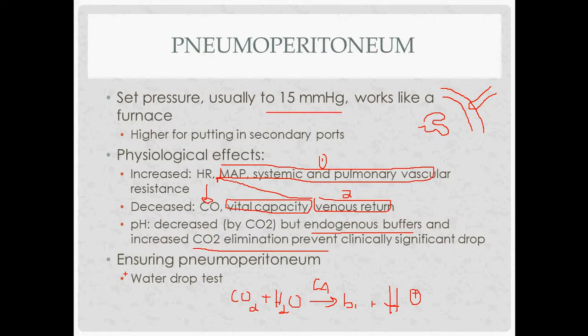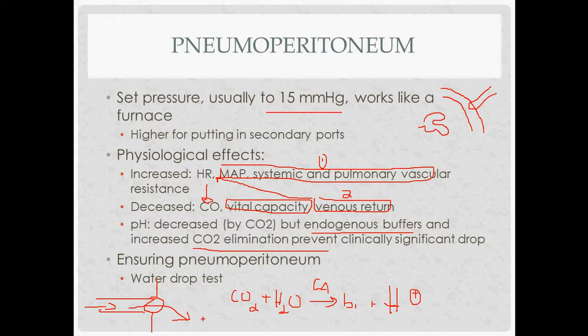To confirm you're inside the peritoneum before filling with CO2, you can do the water drop test. Put some water in — if it freely flows in, you're inside the peritoneum, consistent with the reduced pressure there (same reason the safety stylet popped out of the Veress needle). You can also inject saline and try to aspirate it back. If pressure rises quickly and the abdomen isn't inflating, you're probably not in the right place.